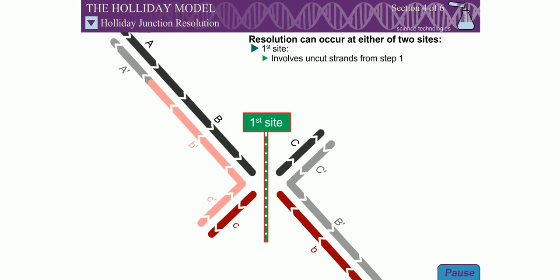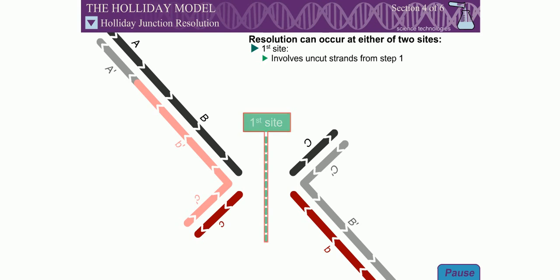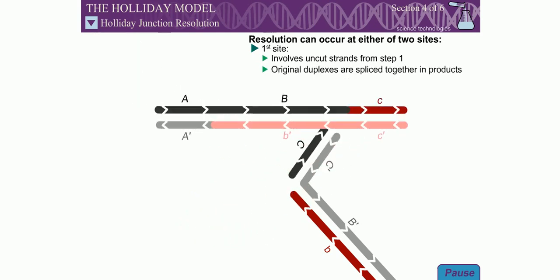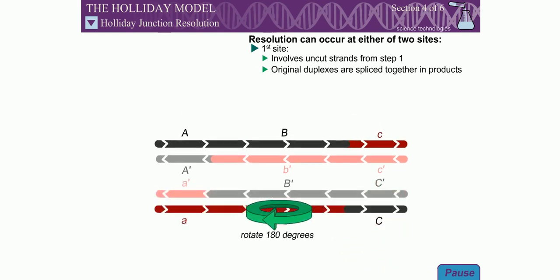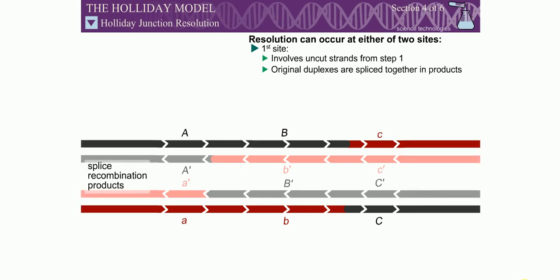The resulting duplexes are called splice recombination products because the two original duplexes are now spliced together, with the DNA sequences flanking the site of recombination swapped. This may not be obvious in the short stretches of DNA shown, but should become clearer in the context of longer DNA duplexes.